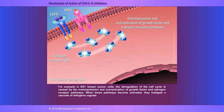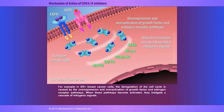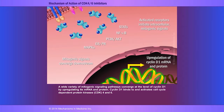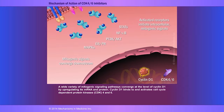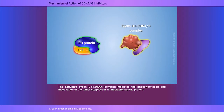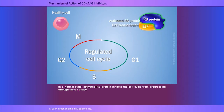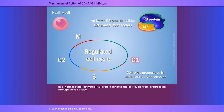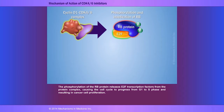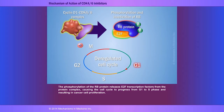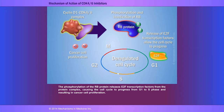When these pathways become activated, they instigate a cascade of mitogenic signals. A wide variety of mitogenic signaling pathways converge at the level of cyclin-D1 messenger RNA and protein upregulation. Cyclin-D1 binds to and activates cyclin-dependent protein kinases CDK4 and 6. The activated cyclin-D1/CDK4/6 complex mediates the phosphorylation and inactivation of the tumor suppressor retinoblastoma protein. In a normal state, activated RB protein inhibits the cell cycle from progressing through the G1 phase. The phosphorylation of the RB protein releases E2F transcription factors from the protein complex, causing the cell cycle to progress from G1 to S phase and resulting in cancer cell proliferation.